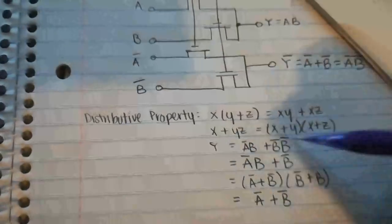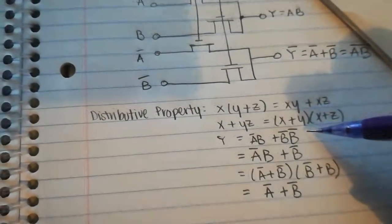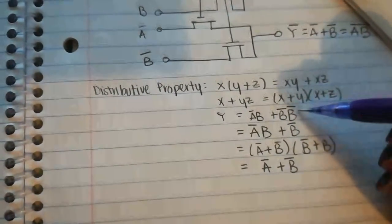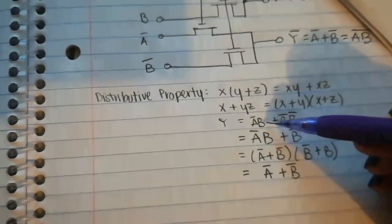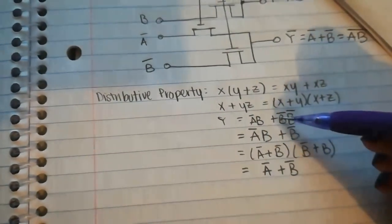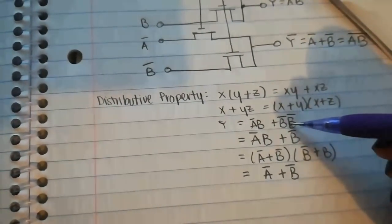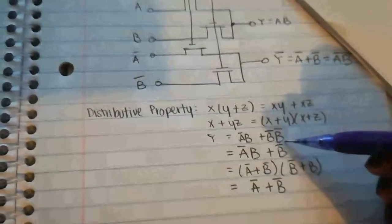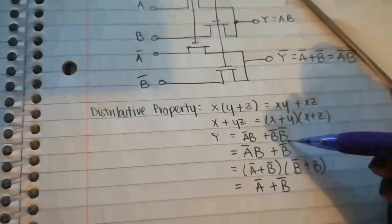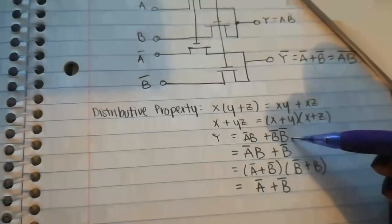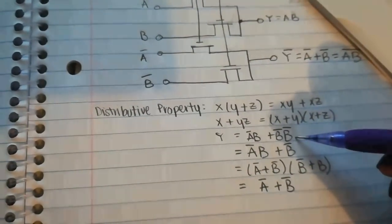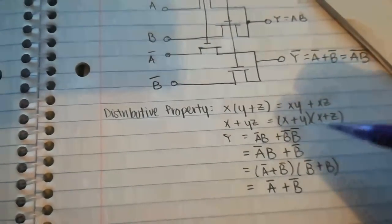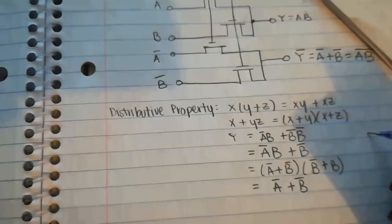So here is the breakdown of the algebra. You have Ā and B plus B̄ and B̄, right? And one of the properties that I sent you, you can read it there, that's the property that makes this go away to B̄ only.